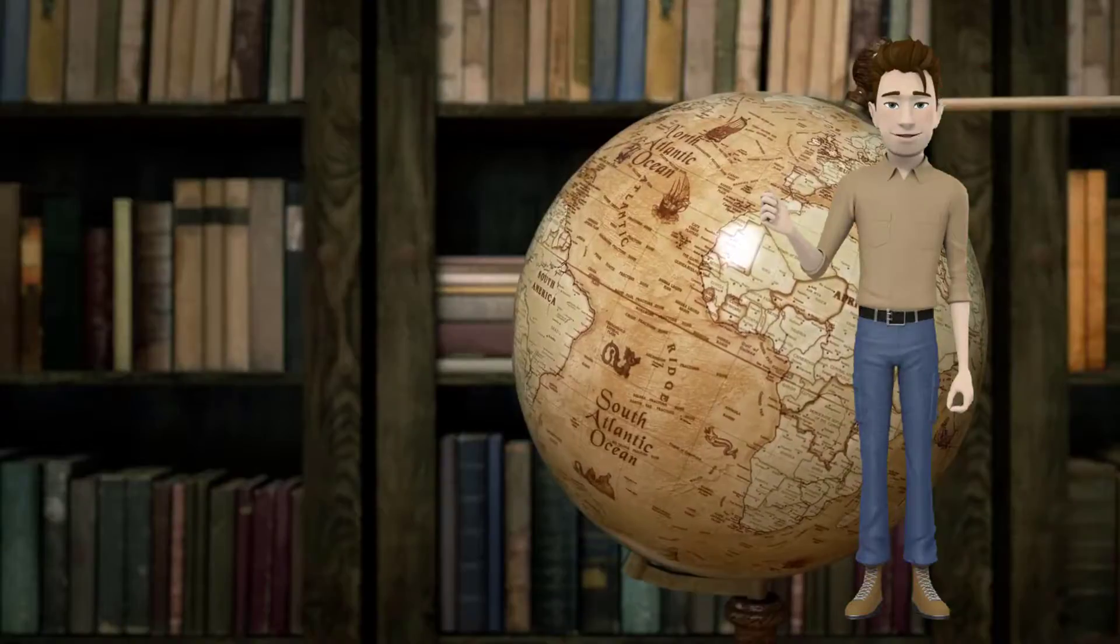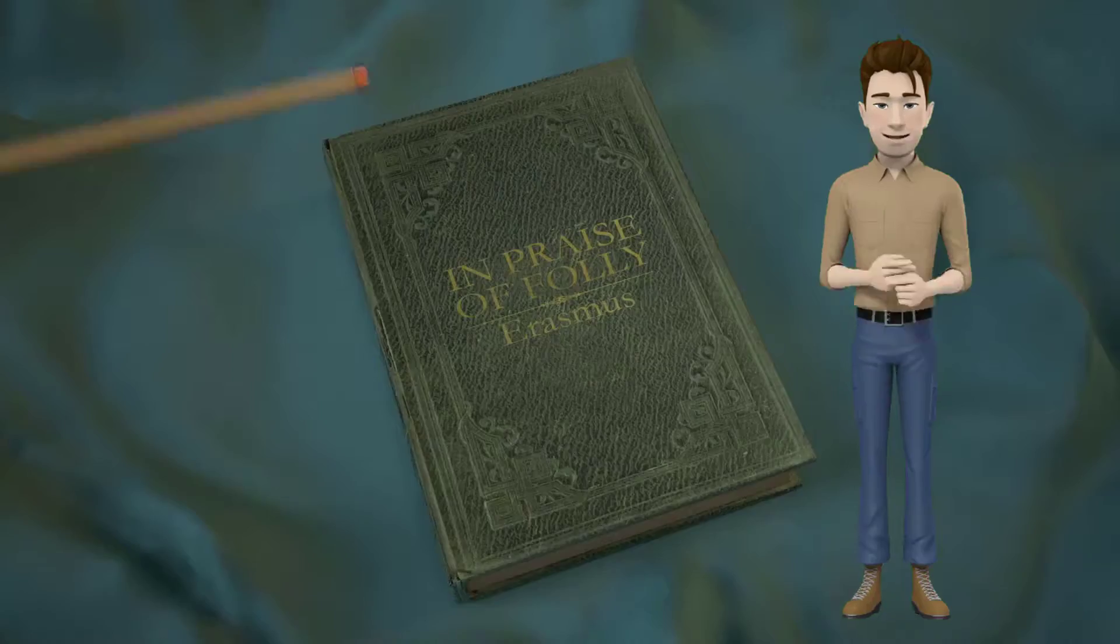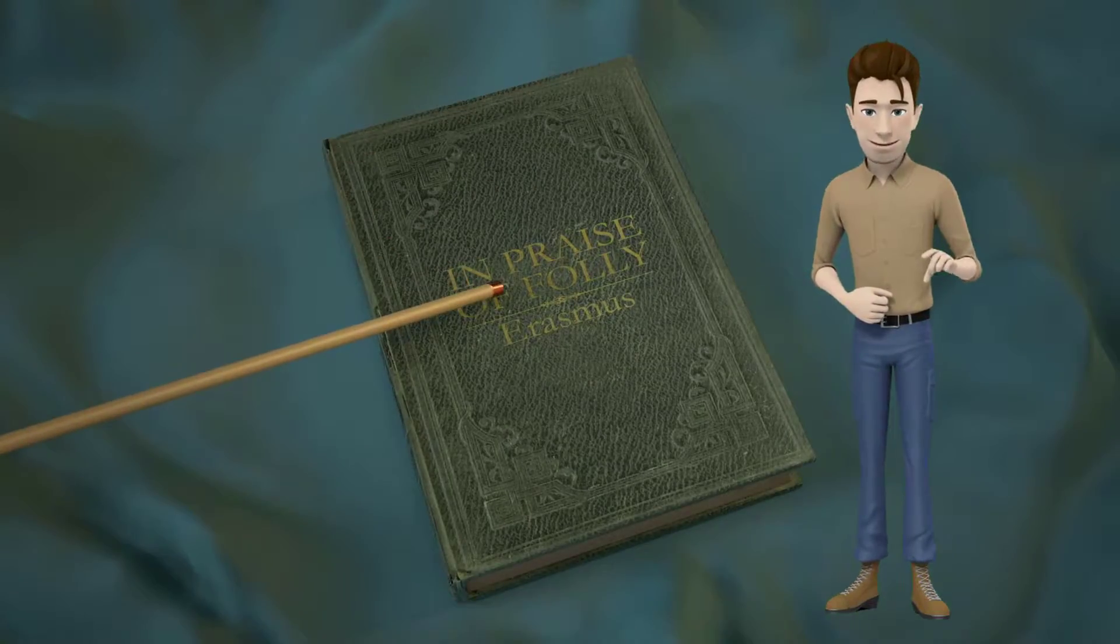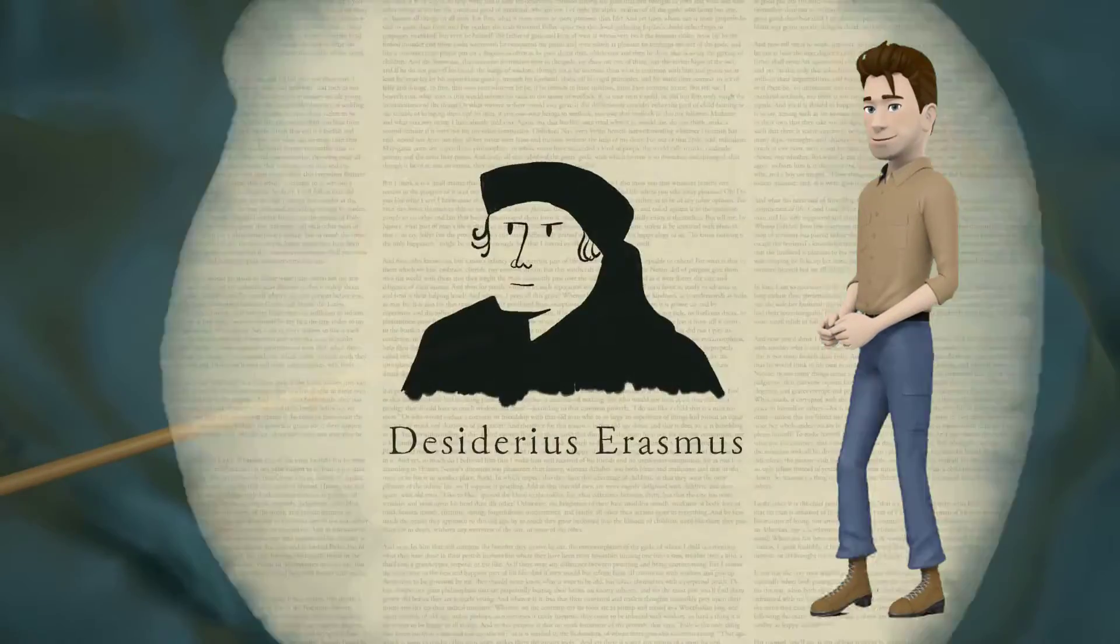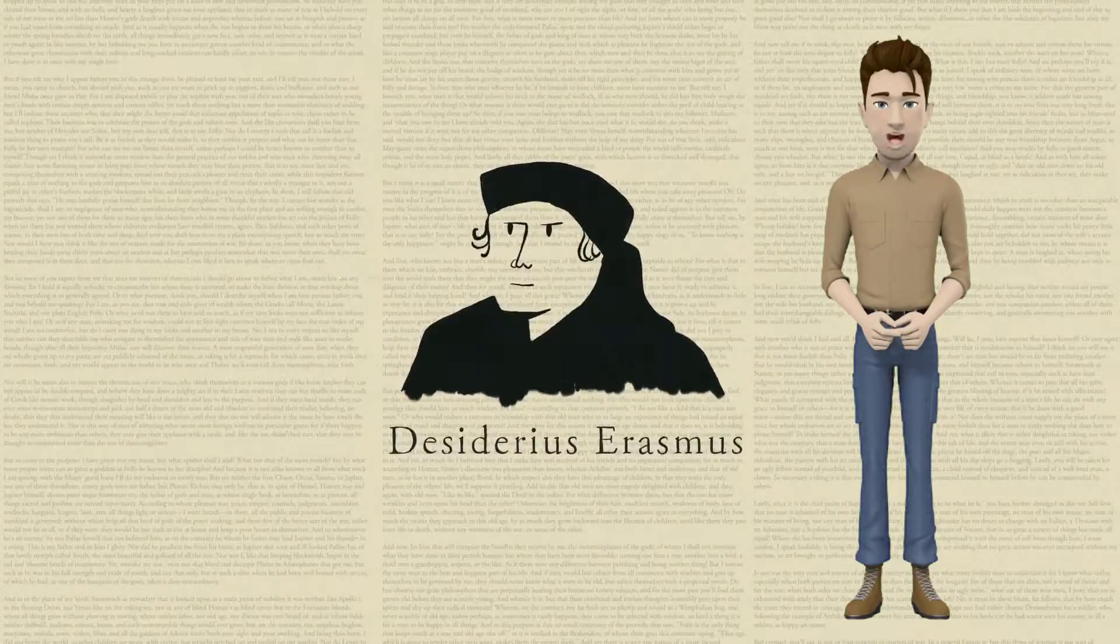One of the most charming books ever written in early modern Europe is called In Praise of Folly, by the Dutch scholar and philosopher Erasmus. In its pages, Erasmus advances a hugely liberating argument.